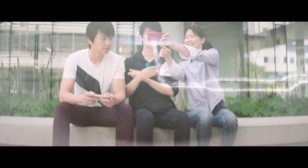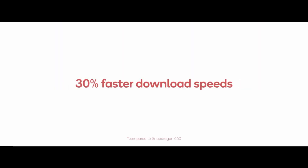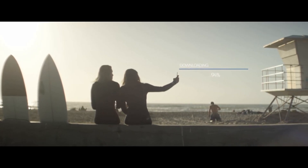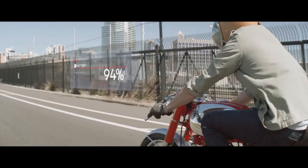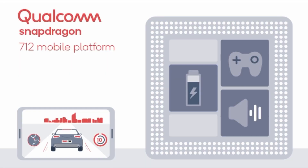The Snapdragon 712 has the same octa-core Kryo 360 CPU that is present on the Snapdragon 710. If you're wondering what the difference is between Kryo and Cortex, Kryo cores are the customized cores that Qualcomm uses in its processors. These custom cores are specifically made to boost performance and deliver a better experience than stock cores.